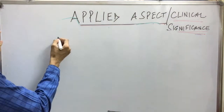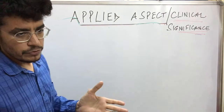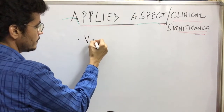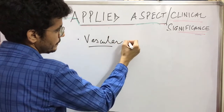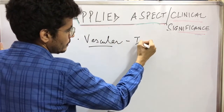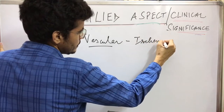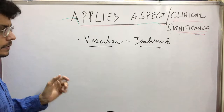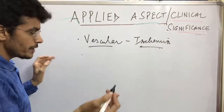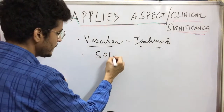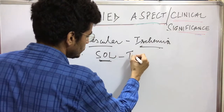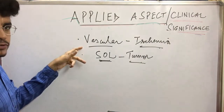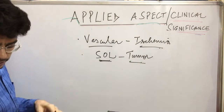What can be the reason for upper motor neuron lesion? Mainly either it can be vascular — if there is ischemia, meaning loss of blood supply — or any space-occupying lesion like a tumor, or any sort of transection. So mainly these two: vascular and space-occupying lesion.